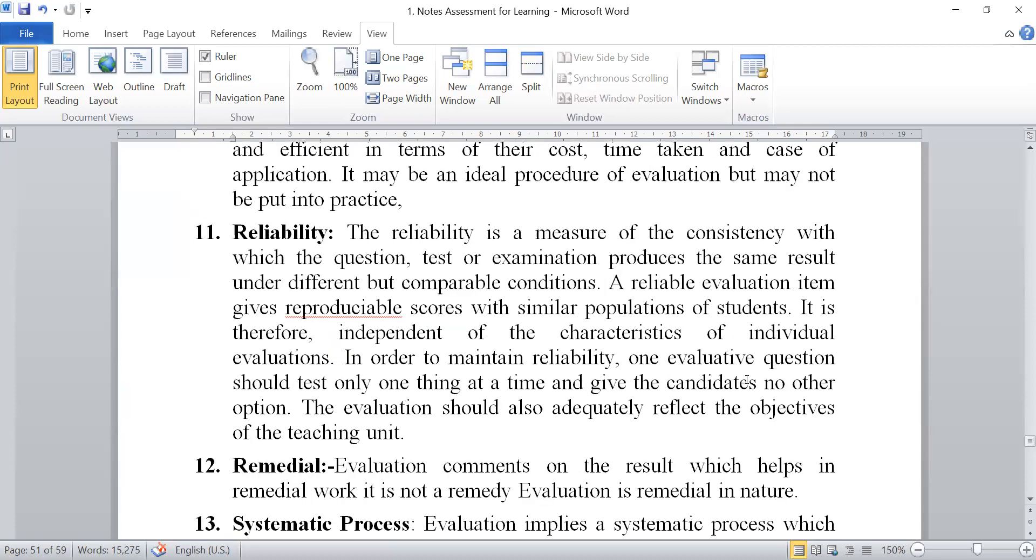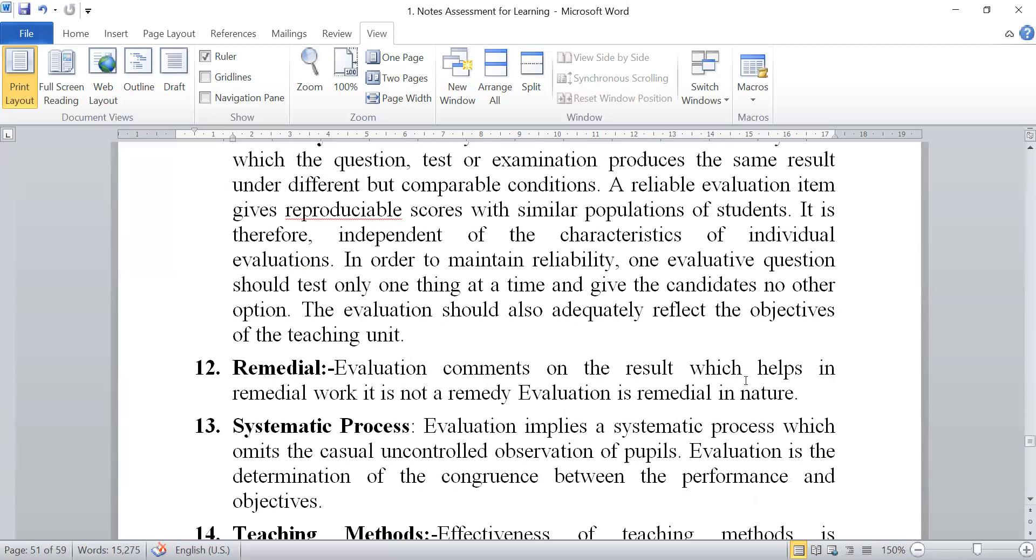Eleventh, reliability. The reliability is a measure of the consistency with which the question tests or examination produces the same results under different but comparable conditions. Some reliable evaluation items give reproducible score with similar populations of the students. It is therefore independent of the characteristics of the individual evaluations. In order to maintain reliability, one evaluative question should test only one thing at a time and give the candidates no other option. The evaluation should also adequately reflect the objectives of the teaching world.